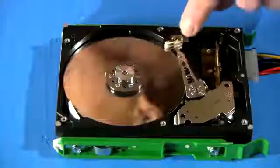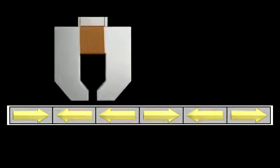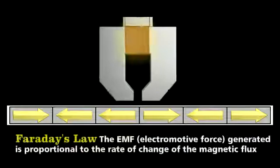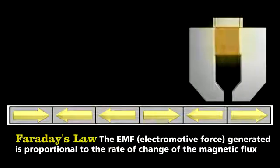At the end of the arm lies the most critical component, the head. At its simplest, it's a piece of ferromagnetic material wrapped with wire. As it passes over the magnetized sections of the platter, it measures changes in the direction of the magnetic poles. Recall Faraday's law. A change in magnetization produces a voltage in a nearby coil.